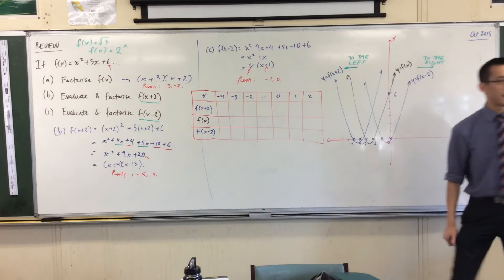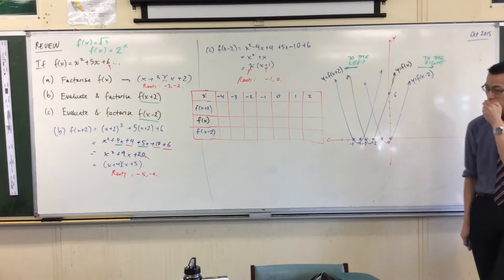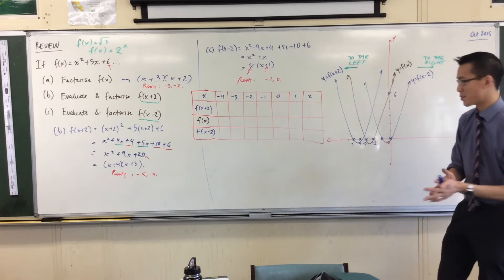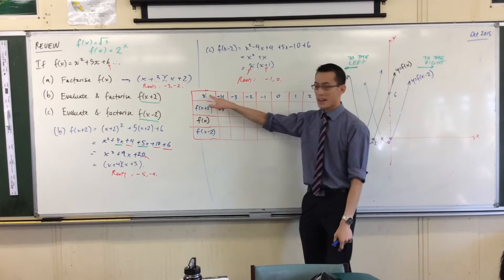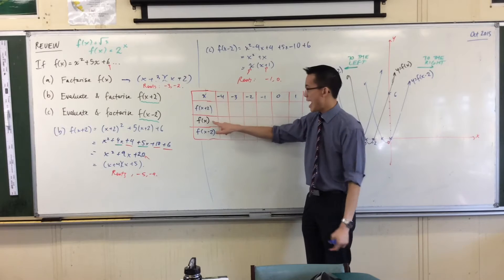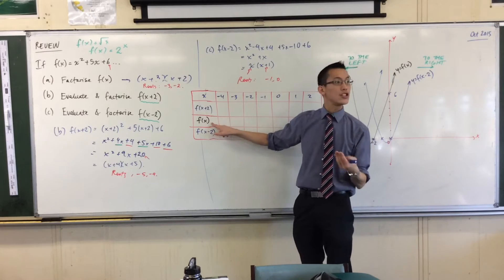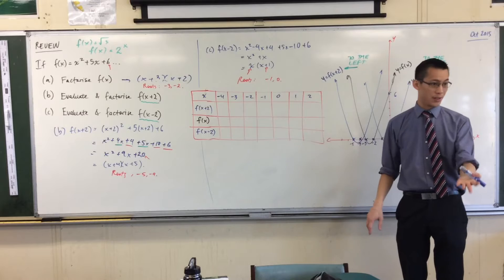Okay, now you've seen a table of values before. You've drawn loads of tables of values before. But this is kind of a table of values on steroids, right? Because usually you just have the x, the inputs, and the y, or the f of x, which is the outputs, okay? And then you match them up and you get coordinates, okay?